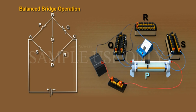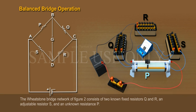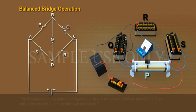Balanced Bridge Operation. The Wheatstone Bridge network of Figure 2 consists of two known fixed resistors, Q and R; an adjustable resistor, S; and an unknown resistance, P.